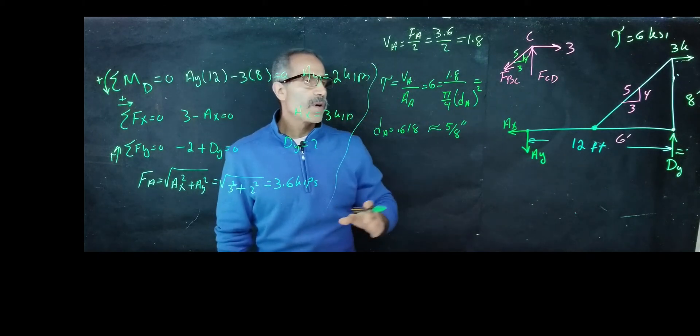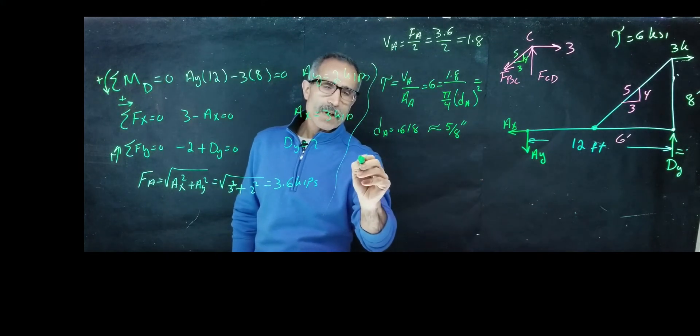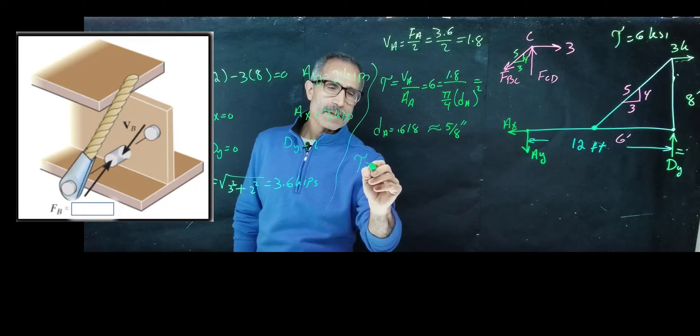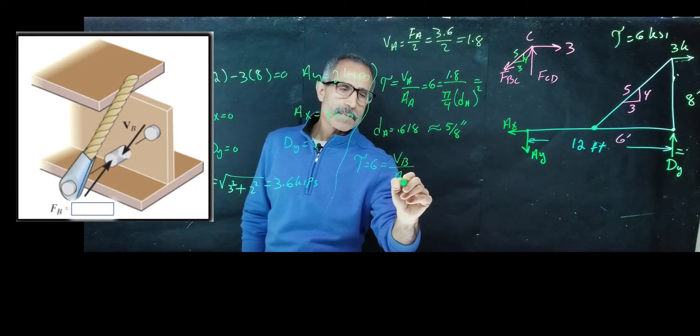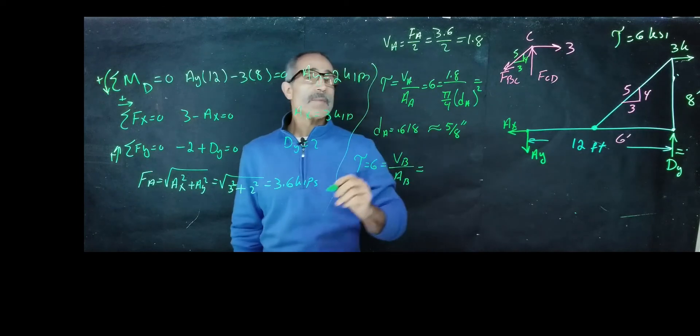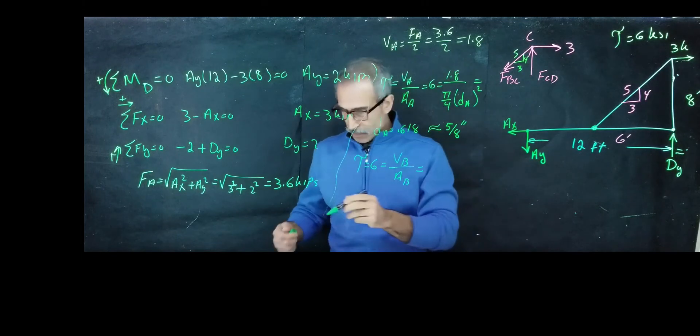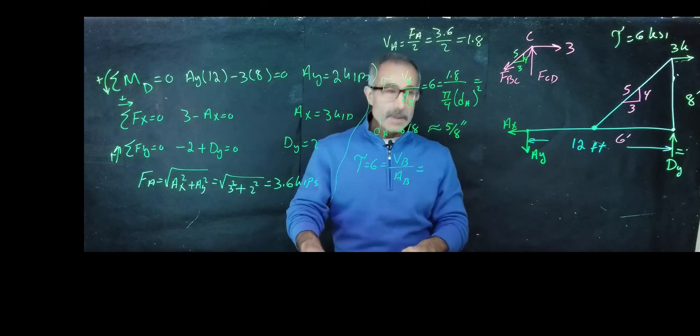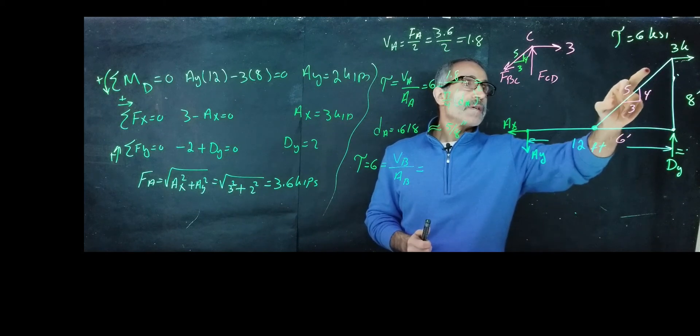Now we're going to go ahead and move over to find out pin B, size of pin B. Same thing. We know the allowable shear stress is equal to 6, and that means Vb divided by the area of Ab. And our Vb came out to, let's find out where Vb came out to. So Vb is right here. We're going to look at this. We want to know what this force is.